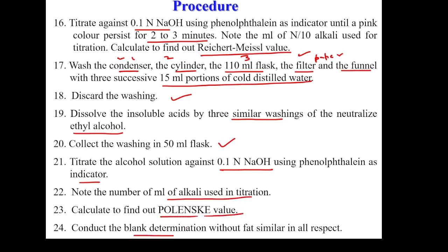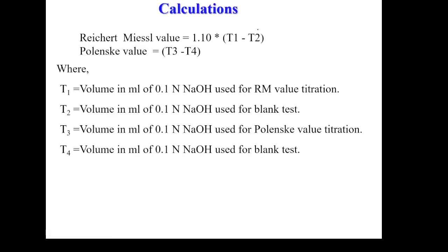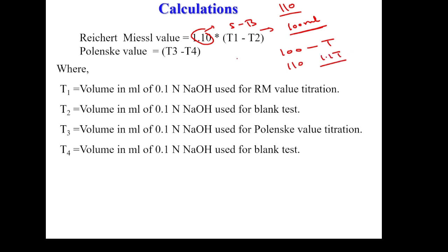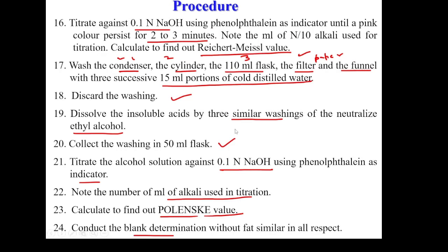For the RM value calculation: (Sample titration − Blank titration) × 1.1. The factor 1.1 arises because we use a 110 ml flask but take only 100 ml for titration — if 100 ml has titer value T, then 110 ml would give 1.1T. For the Polenske value, calculate (Sample − Blank) from the alcohol washings, which represent the steam volatile water-insoluble fatty acids — caprylic and capric acids.